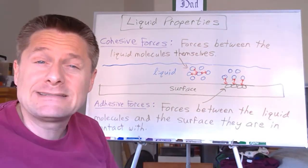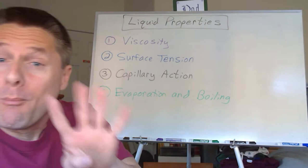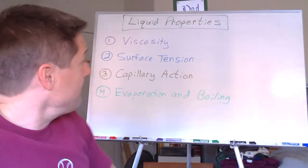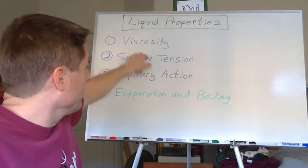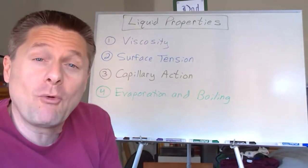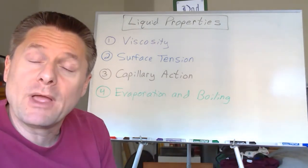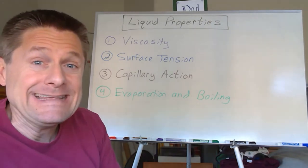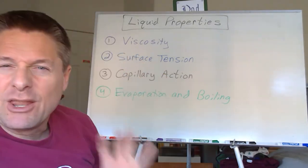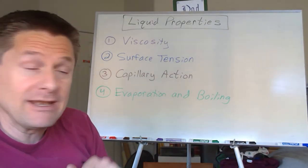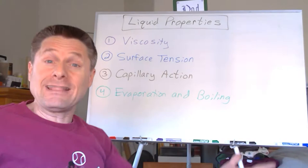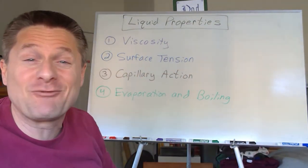Here are the four main liquid properties we're going to look at: viscosity, which many of you have general experience with in everyday life; surface tension, which you've probably heard of; capillary action, which if you've taken biology you're probably familiar with; and evaporation and boiling, which we've talked about before but will now examine in detail and put some quantitative equations together. The first three are quicker — we'll cover those in this video — and evaporation and boiling will get their own separate video. Let's look at viscosity first.